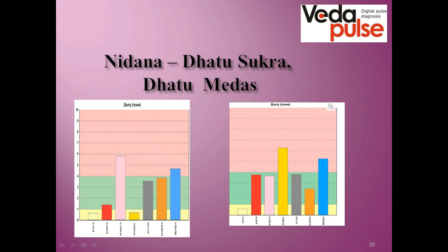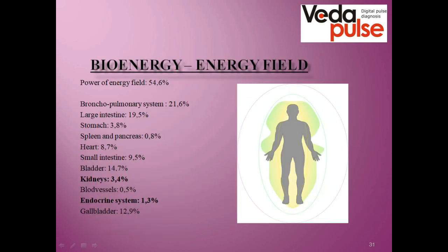On the first screenshot we see that shukra is in tension and meda is in depletion — they can behave differently and can be in either an intense or depleted state, or both in tension, as shown on the second screenshot. The next module is bioenergy. Here we look at the power of the bioenergy field and the distribution of energy in the organs. Normally, energy should have equal numbers in all organs, but sometimes some of them can be exhausted — here, the liver and endocrine system, which can indirectly indicate pathology in the female sex system.